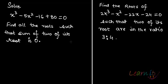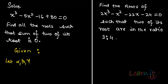Now, what we are given in the question: we are given that the sum of two of its roots is 0. So let α, β, γ be the roots of the given equation, and the given condition is that α + β = 0.